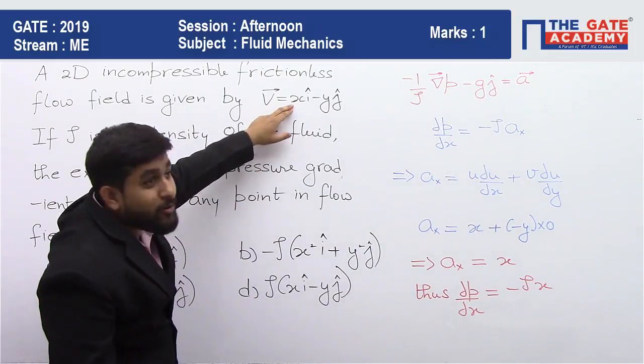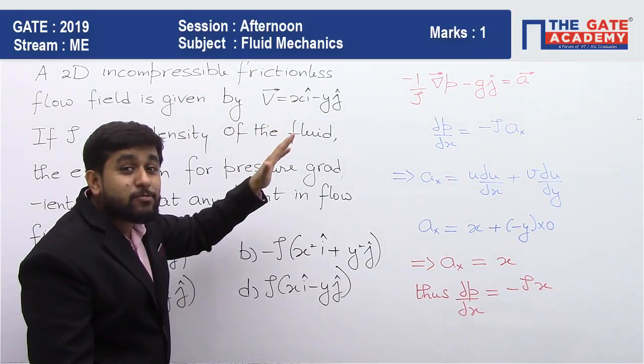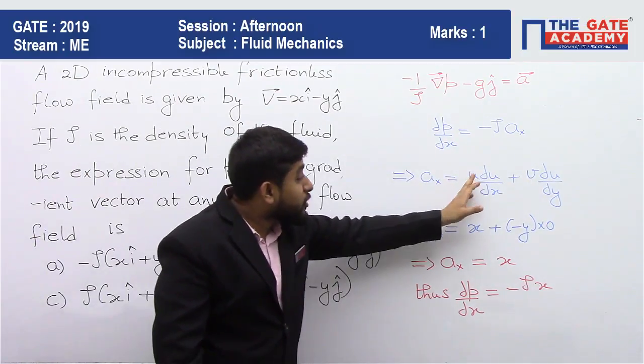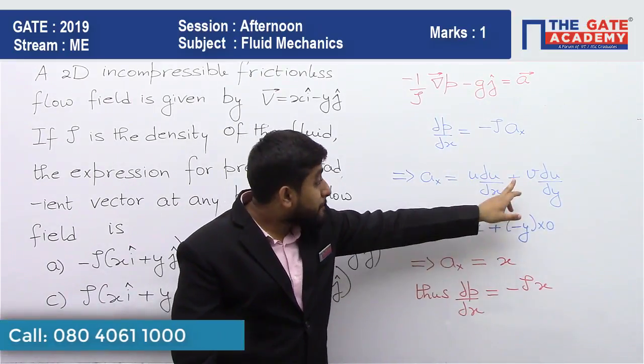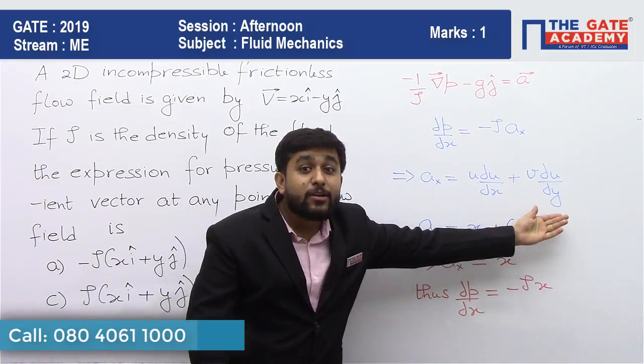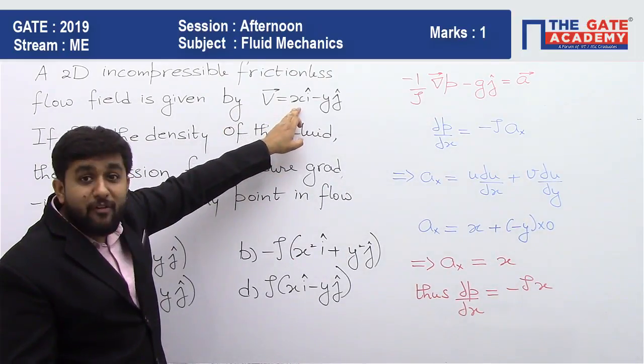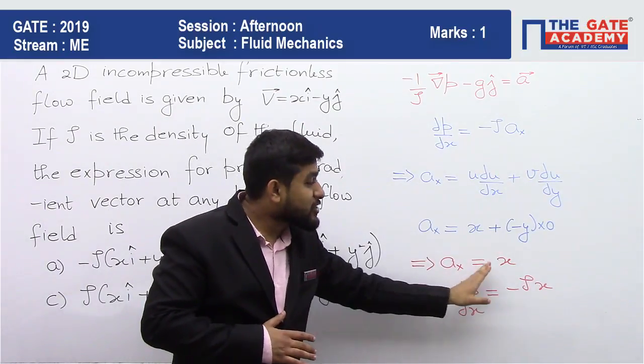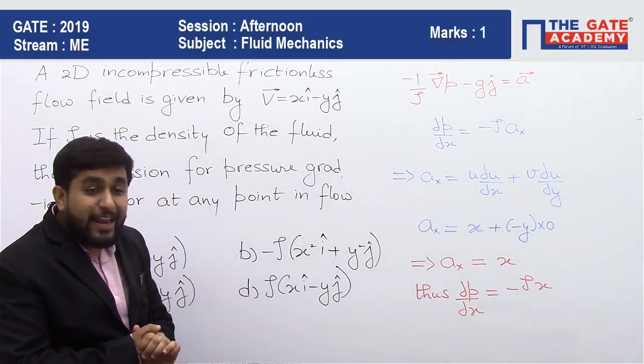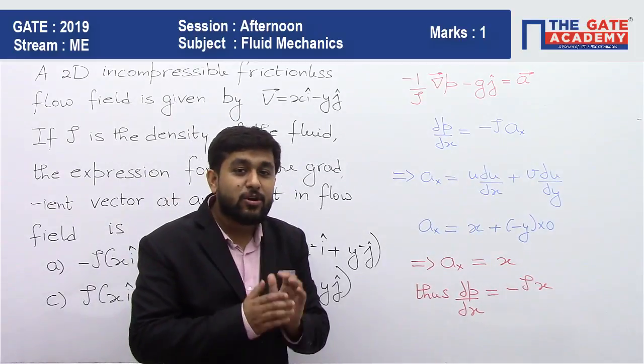Now what is u? I think u is equal to x. And what is v? It is minus y. So your u that will be x into del u by del x that is one only plus v that is minus y into del u by del y. But u is not a function of y. So your del u by del y will be 0. So this is your Ax which is equal to x. So your del P by del x is equal to minus rho x.